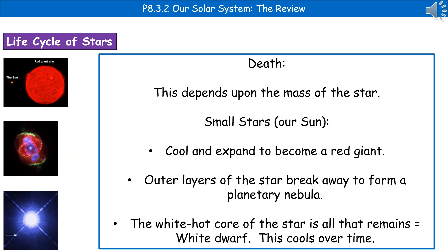The next part of the star's life is the death of the star, and what happens at this point is dependent upon the mass of it. For small stars like our sun, in their death phase they cool and expand to become something called a red giant — and when we say giant, we mean giant. Then the outer layers of the star break away and form a planetary nebula, like the one on the left there, and eventually the white hot core of the star is all that remains, known as a white dwarf — that teeny tiny little speck with the arrow pointing to it. Over time the white dwarf will cool until eventually it just fades away.